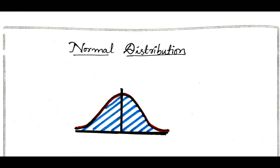As we know, the normal distribution will be of a bell-shaped curve. It is symmetric about the line z equal to 0, and the area of this curve will always be equal to 1.